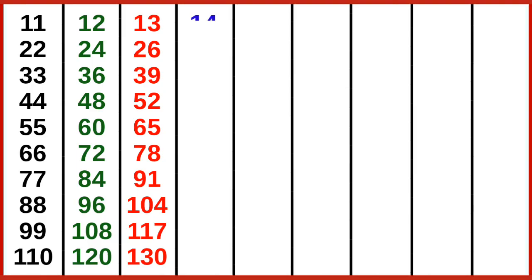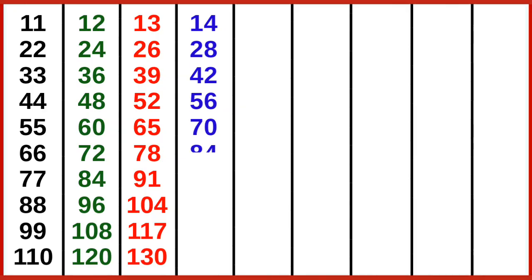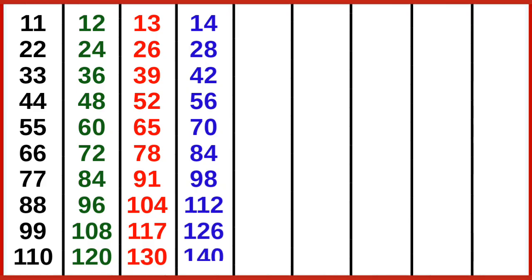14 ones are 14, 14 twos are 28, 14 threes are 42, 14 fours are 56, 14 fives are 70, 14 sixes are 84, 14 sevens are 98, 14 eights are 112, 14 nines are 126, 14 tens are 140.